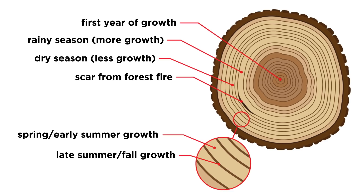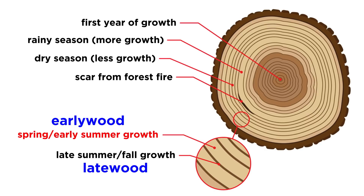Let's now examine a typical set of tree rings and try to understand what we are looking at. In temperate zones, the annual ring of some but not all species can be further separated into early wood and late wood. Early wood is usually lighter in color and produced in the spring and early summer, when the tree is growing more rapidly, while late wood is usually darker in color and formed in the late summer and early fall, when growth has slowed down. In some species the contrast is readily apparent, while in others it's much harder to see.